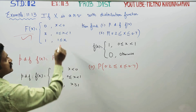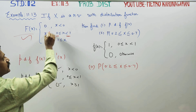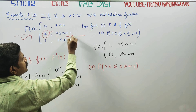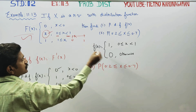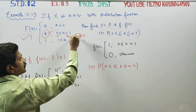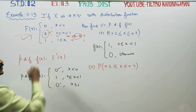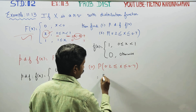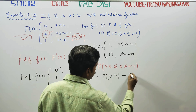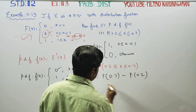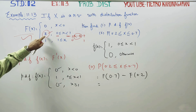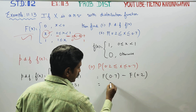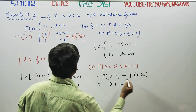For 0.2 and 0.7, both values exist in the interval where the formula applies. This can be written as F(b) minus F(a), that is F(0.7) minus F(0.2), which gives 0.7 minus 0.2 = 0.5.